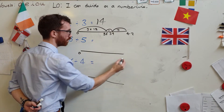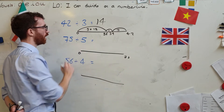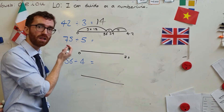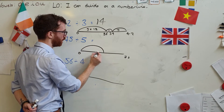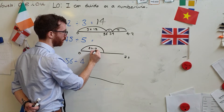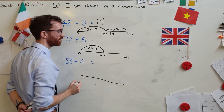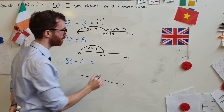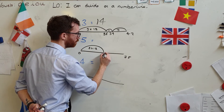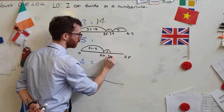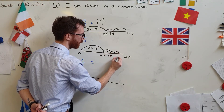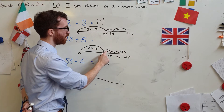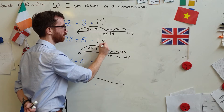Starting at zero, going to 75 — how many fives in 75? I know that five times 12 is 60. So we've got 60 so far. Let's count on in fives: one five gets me to 65, another to 70, another to 75. So I've got twelve, thirteen, fourteen, fifteen fives. 75 divided by five equals 15.